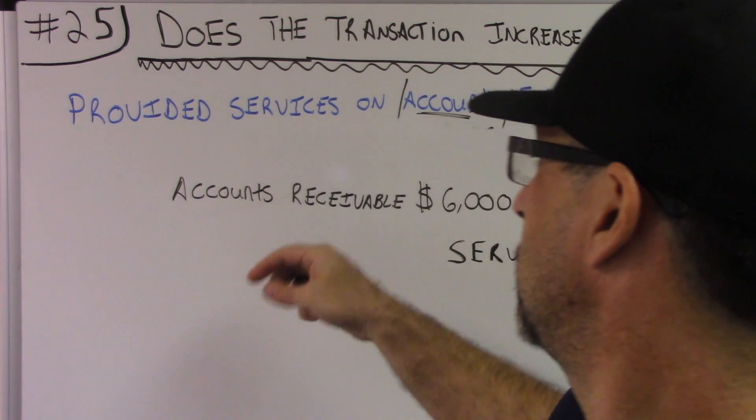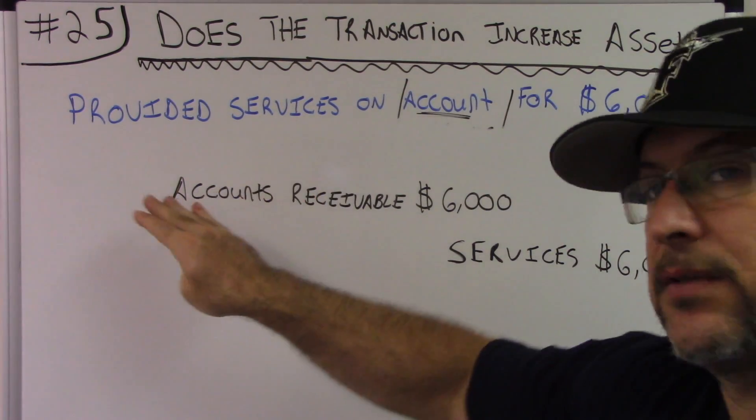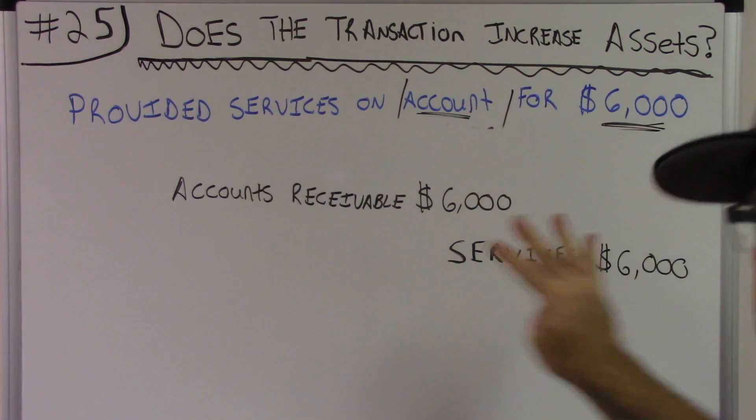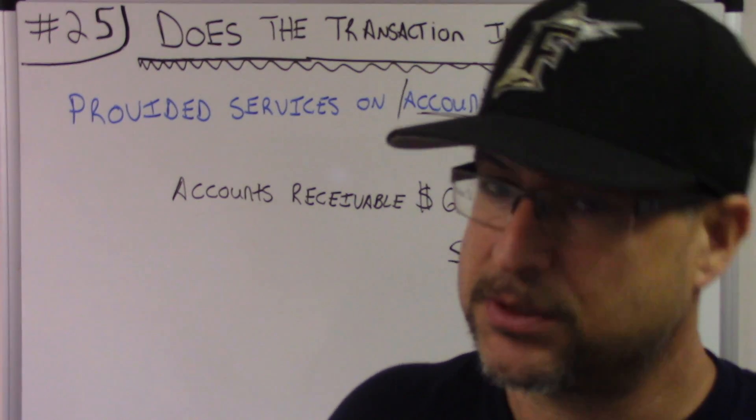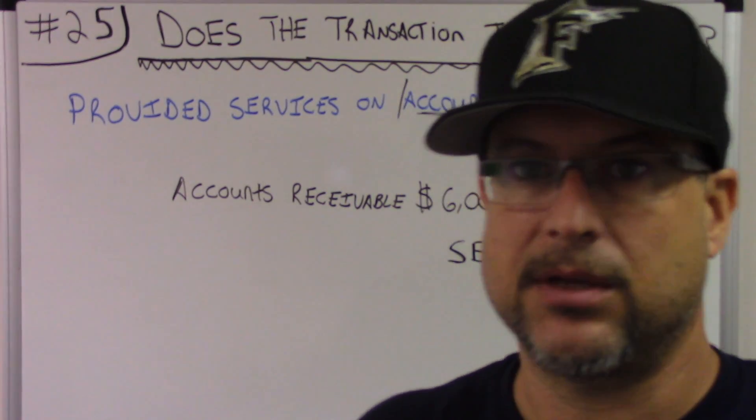Debit accounts receivable for $6,000; credit services for $6,000. When you're in a journal entry, debits are always on the left and credits are staggered to the right. Debits are always first. Debits, credits — D. Sadler. Yes, the assets are going up. This transaction does increase assets by $6,000 for accounts receivable.